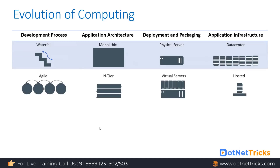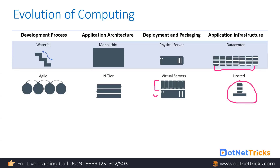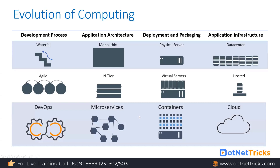Later on we started to use agile as a development process, and for the application architecture we started to follow an n-tier approach. For deployment and packaging we used virtual machines — a single machine could be divided into multiple VMs. So we no longer needed multiple physical machines; one machine was sufficient and could be divided into multiple VMs for deploying applications in isolated environments.